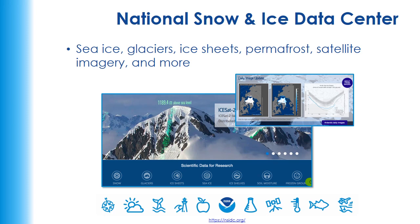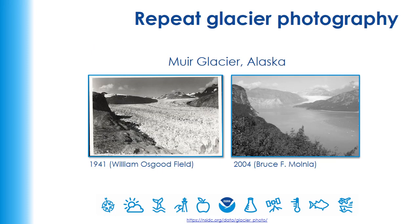The National Snow and Ice Data Center shows off a lot of cool cryosphere data sets. One of my favorites that's a little hard to find is Repeat Glacier Photography. This website pulls historic photos of glaciers and pairs them with recent photos, so you can see how glaciers have gotten smaller over time. This can be very dramatic and meaningful for students to understand what's happening on our planet.